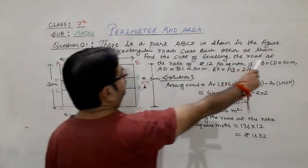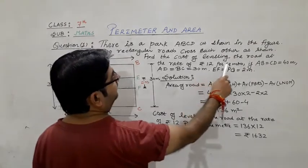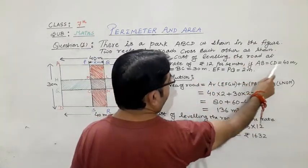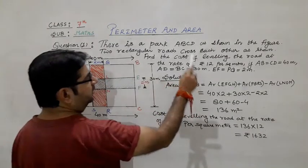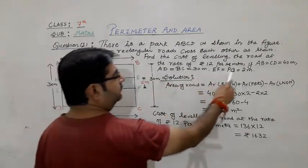Find the cost of turfing the roads at the rate of 12 rupees per square meter if AB = CD = 40 meters and AD = BC = 30 meters. EF = PQ = 2 meters.